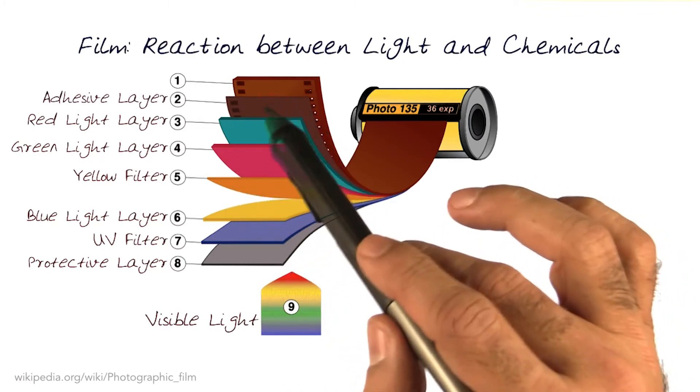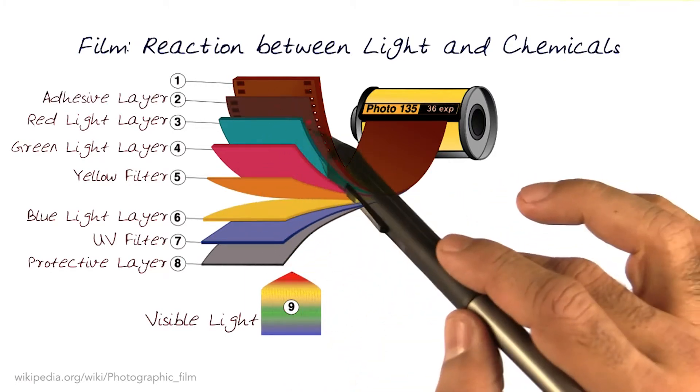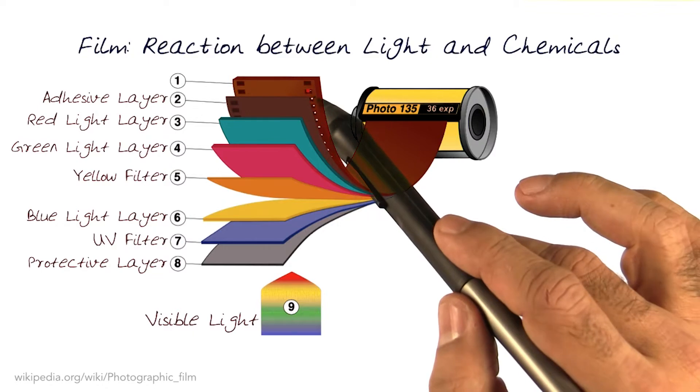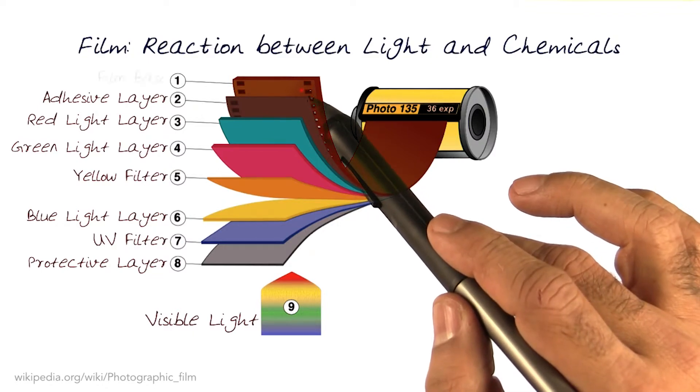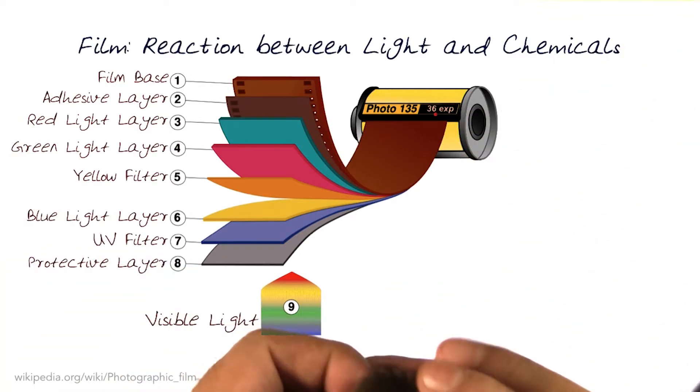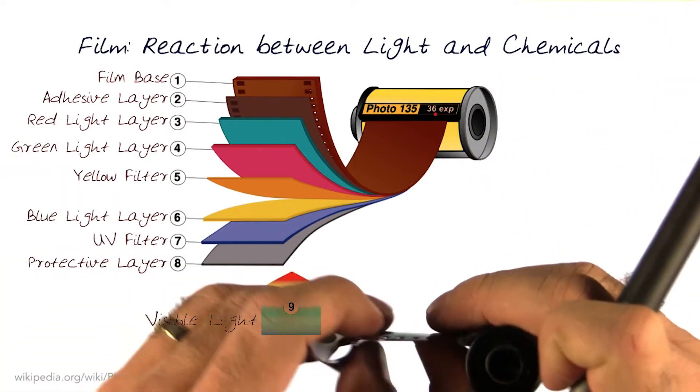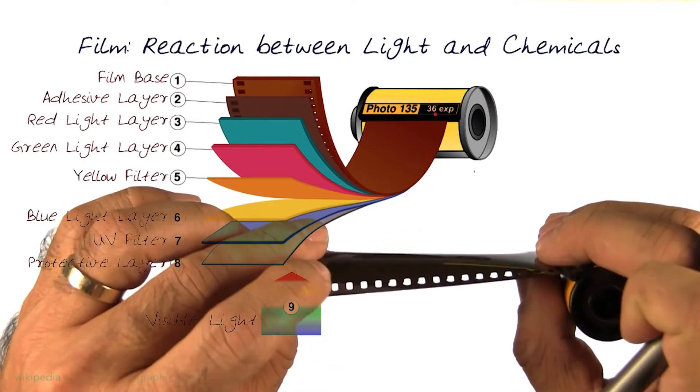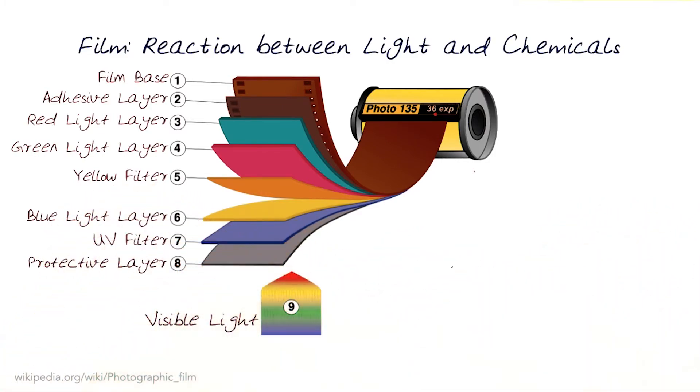Then there is an adhesive which is put in there. These are all very thin layers. The thickest one is the film base, which gives it the structure and keeps it stable. All of this is tied up in something this thin. It's important to note that a lot of this is packed up into a very small thing.